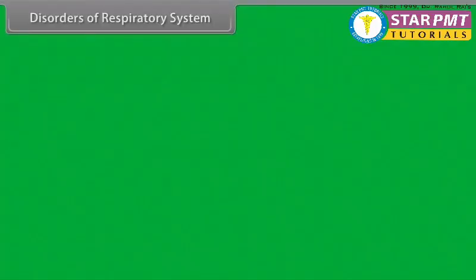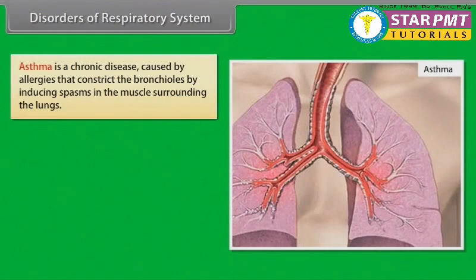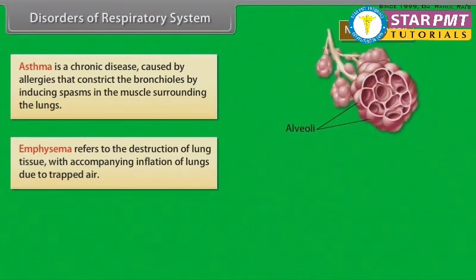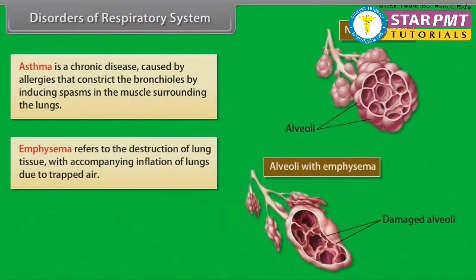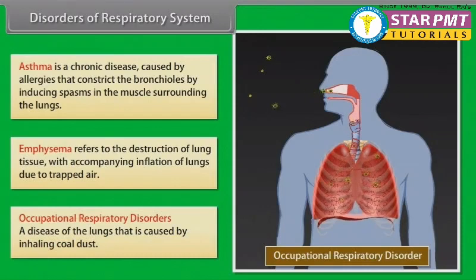Disorders of the respiratory system. Asthma is a chronic disease caused by allergies that constrict the bronchioles by including spasms in the muscle surrounding the lungs. Emphysema refers to the destruction of lung tissue with accompanying inflation of the lungs due to trapped air. Occupational respiratory disorders are diseases of the lungs caused by inhaling coal dust.